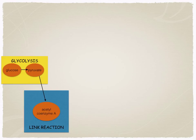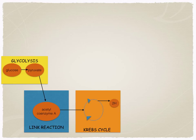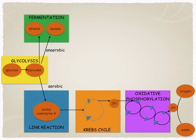Glycolysis is the splitting of a six-carbon glucose molecule into two three-carbon pyruvate molecules. The pyruvate then moves into the link reaction, where the three-carbon pyruvate is converted into carbon dioxide and a two-carbon molecule called acetyl coenzyme A. This moves into the Krebs cycle, a series of nine reactions that yield some ATP but more importantly a large number of electrons. Oxidative phosphorylation then uses those electrons to make ATP and produces water. Anaerobic respiration will be covered in more detail in a later topic.